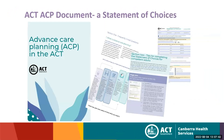The advanced care planning program and ACT Health have recently released a document called 'Advanced Care Planning in the ACT,' which has a statement of choices form at the end, as well as frequently asked questions and tips to complete. That's a really good start to think about advanced care planning and your wishes. If you'd like a copy, we're happy to post one, or it is available on the ACT Health and Canberra Health Services website to download.